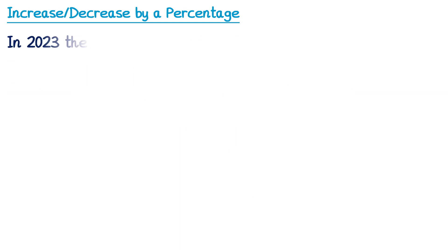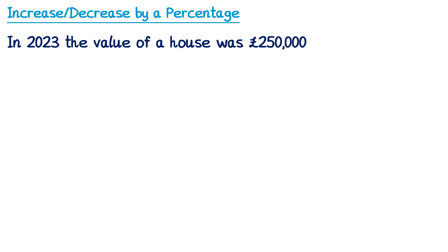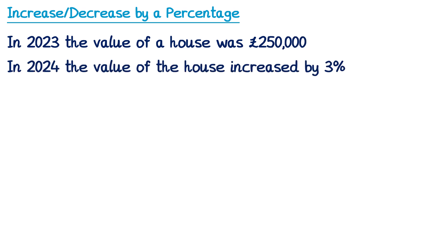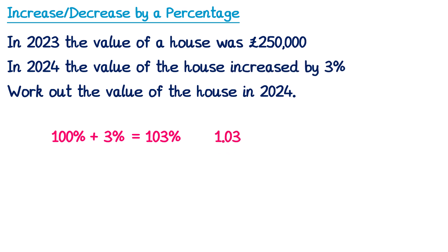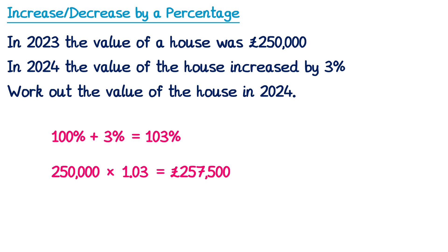In 2023, the value of a house was £250,000. In 2024, the value increased by 3%. Work out the value of the house in 2024. We'll use the multiplier approach. For a 3% increase: 100% + 3% = 103%, divided by 100 = 1.03. We multiply £250,000 by 1.03, which gives £257,500 — the value of the house in 2024.